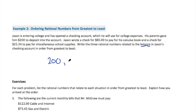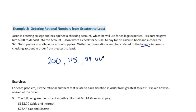After he spends $85, he has $115. And then after he spends $25.34, that would be $89.66. So that's the progress of his balance from greatest to least.